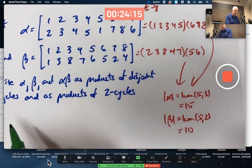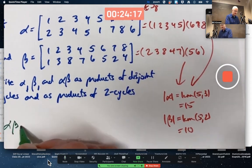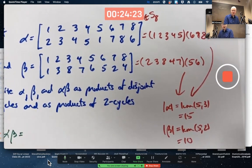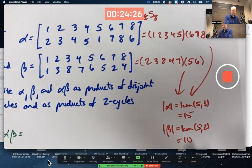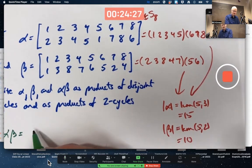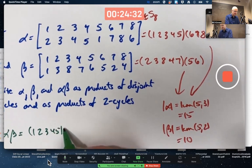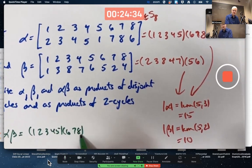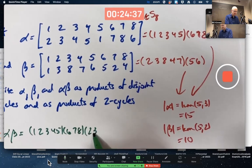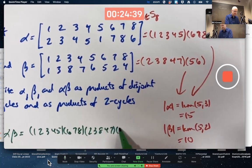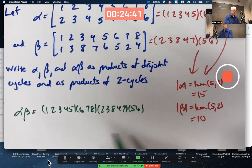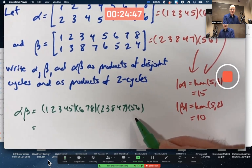What's their product? Alpha beta. I probably better be careful and write it all down here instead of trying to go back and forth. Alpha again is 1, 2, 3, 4, 5 as a cycle, and then 6, 7, and 8. And beta is 2, 3, 8, 4, 7, and then 5, and 6. How can I simplify this? All right, as quick as I can.